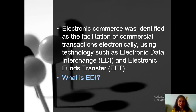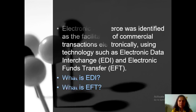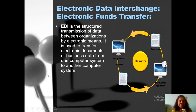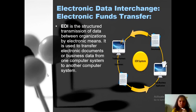EDI is basically used for sending documents to trading partners and customers involved in a business application — sending documents from your PC to another PC. EDI is the structured transmission of data between organizations by electronic means. Just like email, you can send confidential data or documents to trading partners and suppliers. It is also used to transfer electronic documents or business data from one computer system to another.